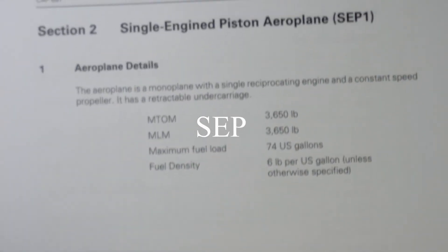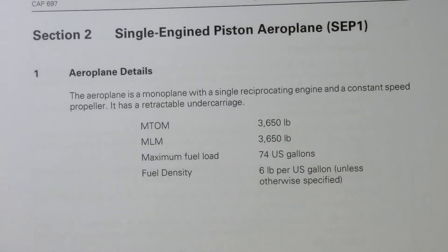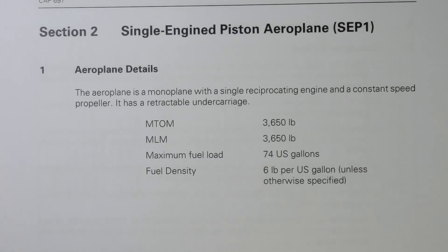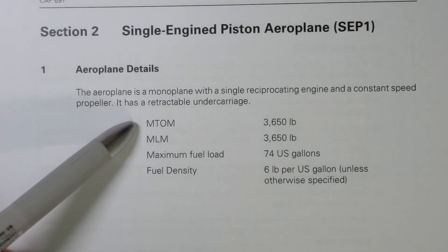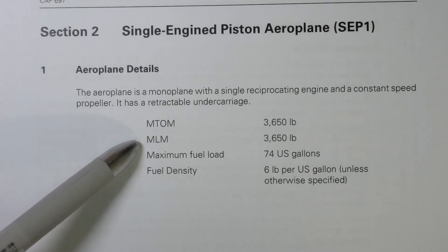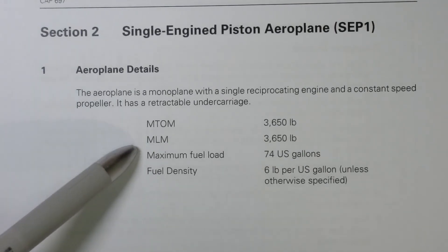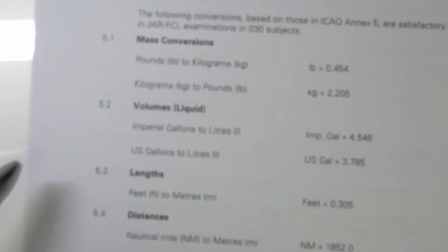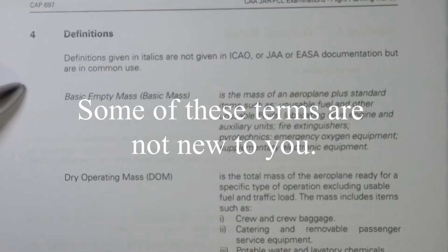Then we jump into the first aircraft, which is in Section 2. Section 2 covers the single-piston aeroplane, and it gives us some facts about the aircraft — MTOM, MLM. You need to know what these are, and we would get that from the definitions found on page 4 of the introduction.